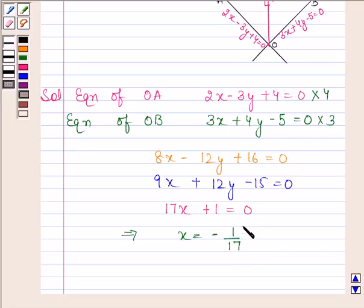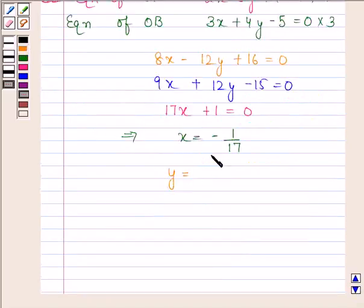Now by substituting the value of x in equation of OA, we get the value of y as 22 by 17.